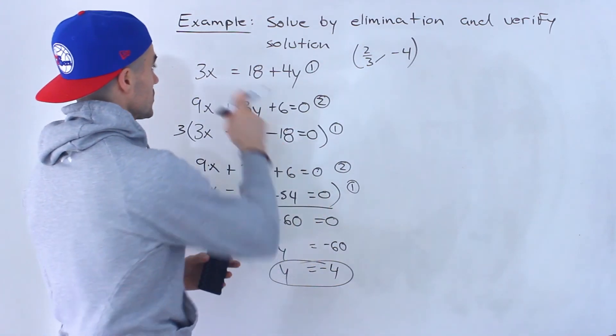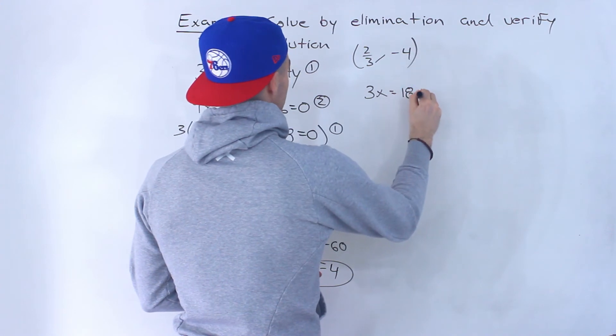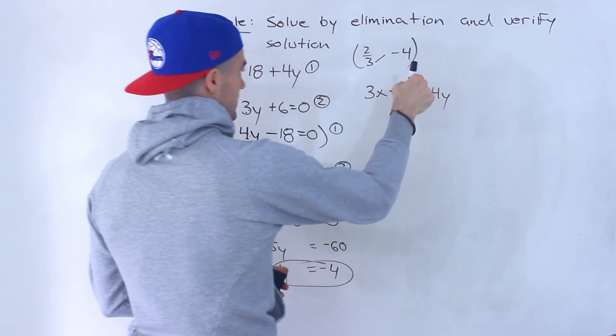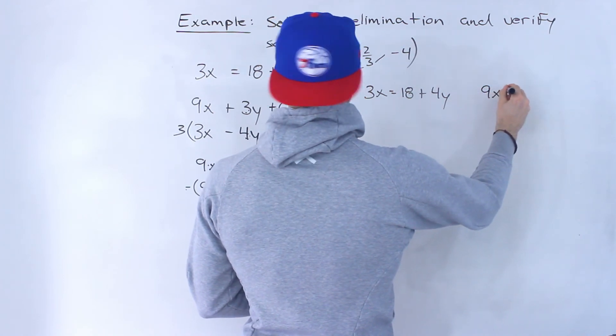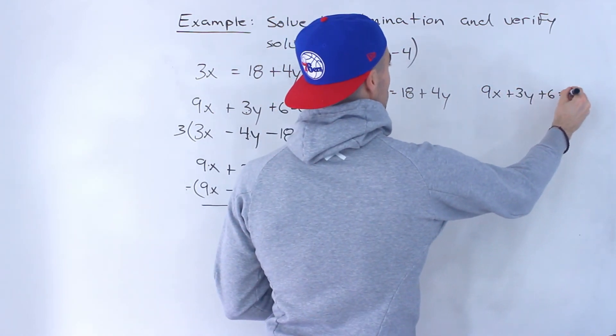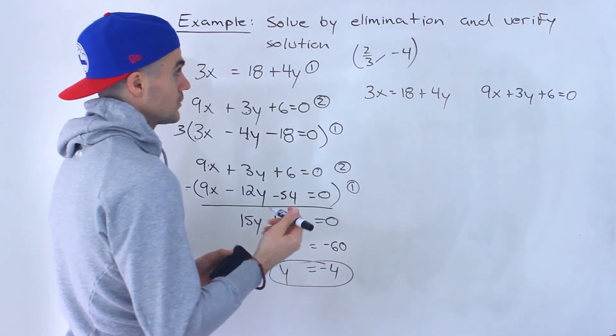Now if we were to check our solution, we would just rewrite both lines, plug in the x and y, and make sure the left side equals the right side. So 9x plus 3y plus 6 equals 0. Those are the two lines that we started with.